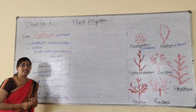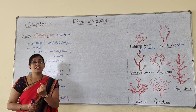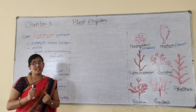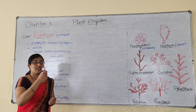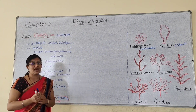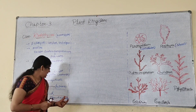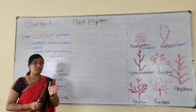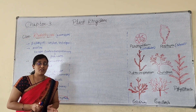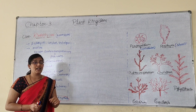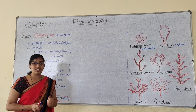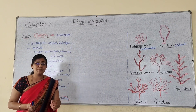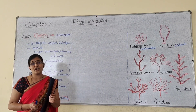Phycoerythrin has the capability to absorb blue and green wavelengths, and thus the algae appear red in color. These blue and green wavelengths have the capability to reach into the deepest parts of the sea — they can penetrate deep into the sea. Hence, red algae are usually seen at the deepest water bodies in the sea.